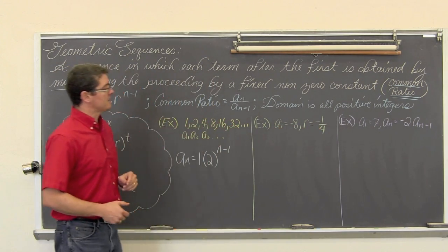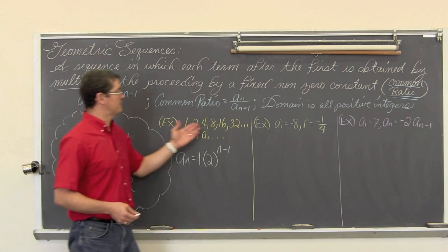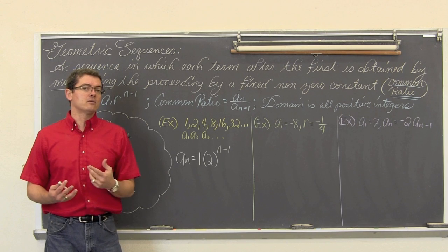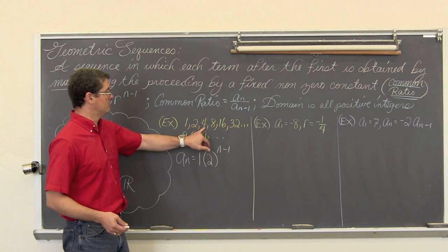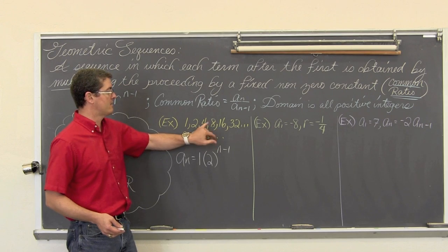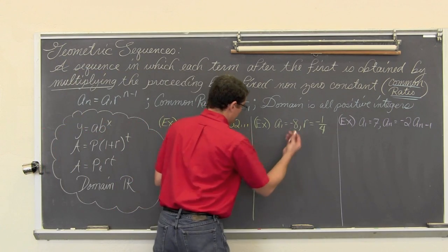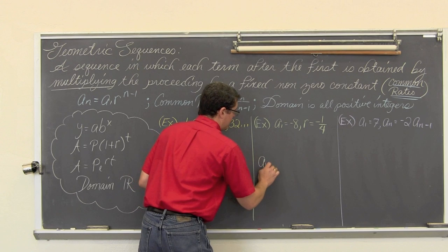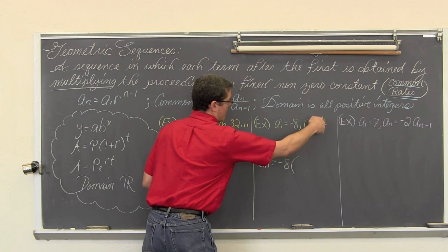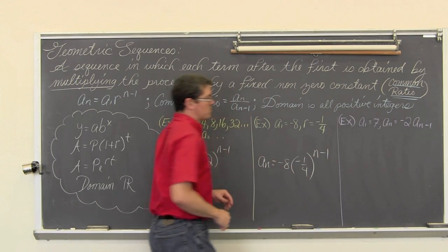The second example is really almost as easy, maybe even easier. With the first example I had to figure out my own r value by doing a_n divided by a_(n-1) and making sure I get the same ratio. This one I just write it out: a_n is equal to negative 8 times my r value of negative one-fourth, raised to the n minus 1 power.